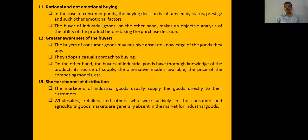Industrial purchases are rational purchases — they do not deal with emotions but with technicality and precision. Buyers have greater awareness and complete knowledge regarding the technicality of the product. Distribution uses shorter channels — unlike consumer distribution which uses long channels with many intermediaries, industrial distribution uses very short channels.